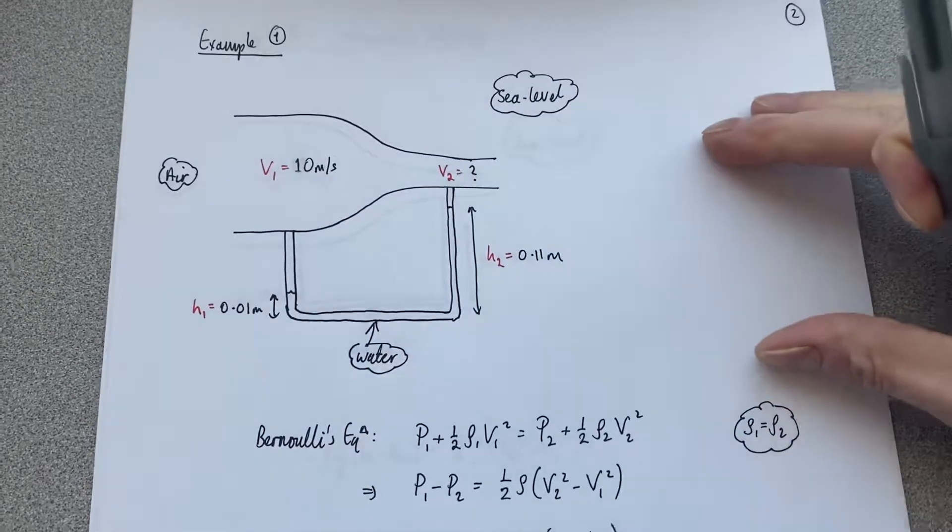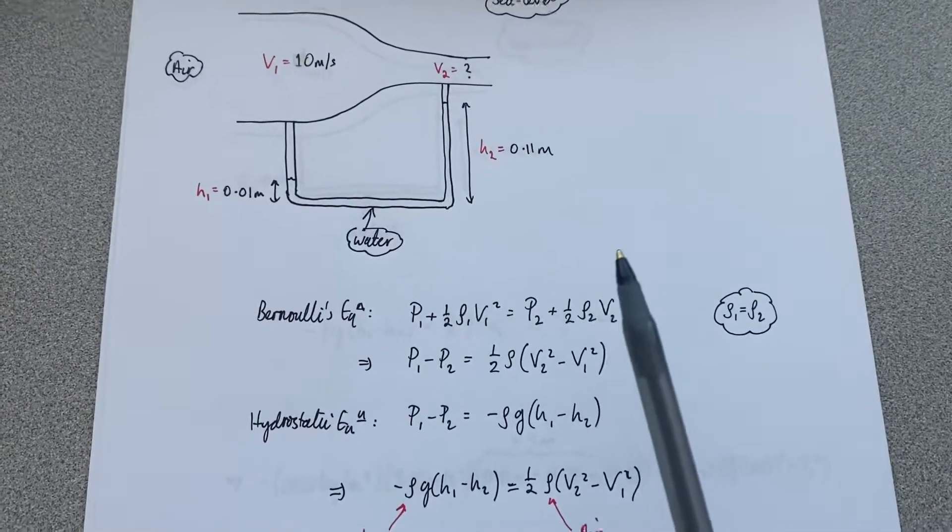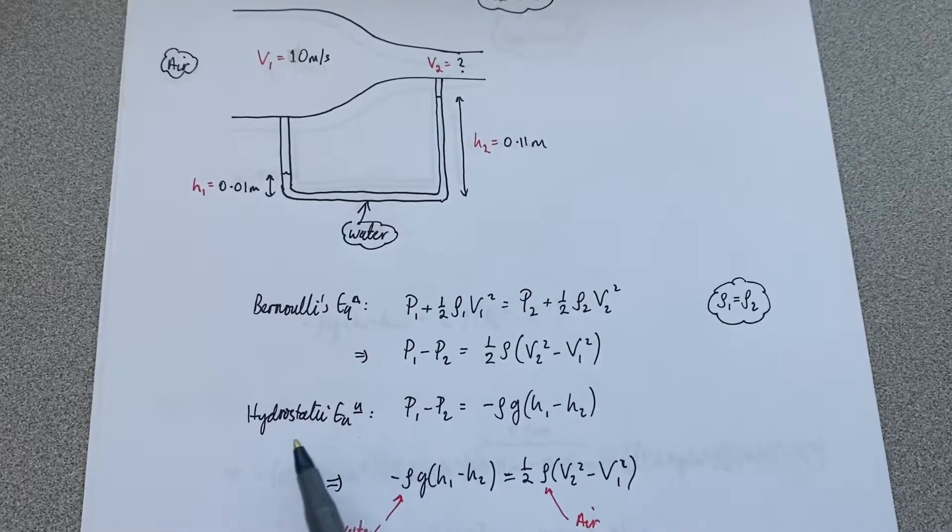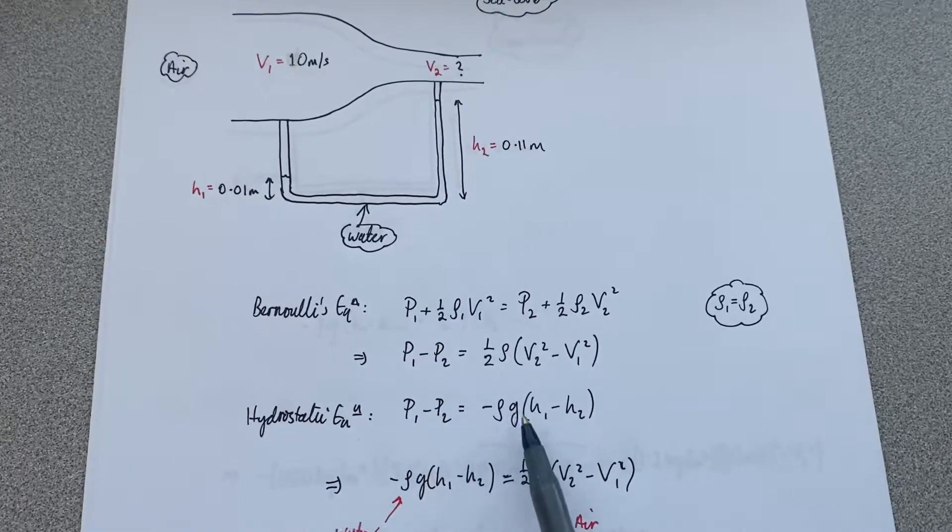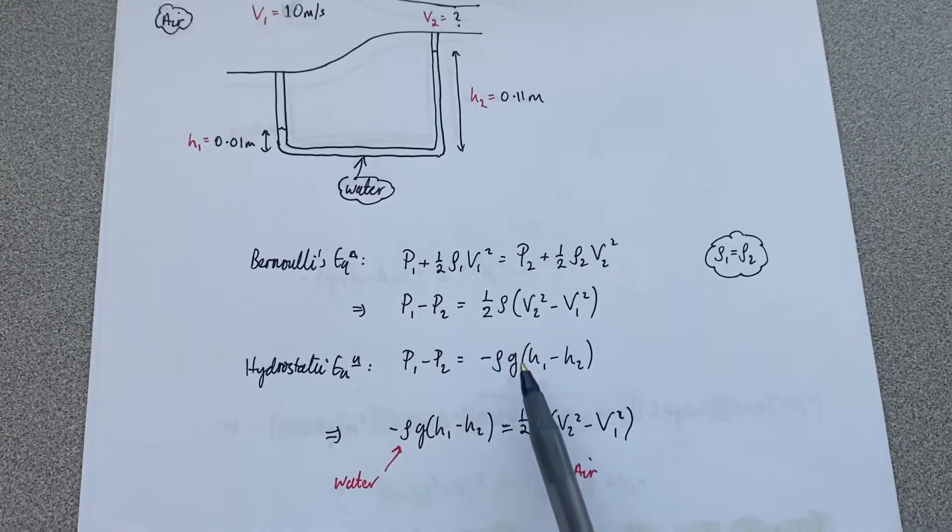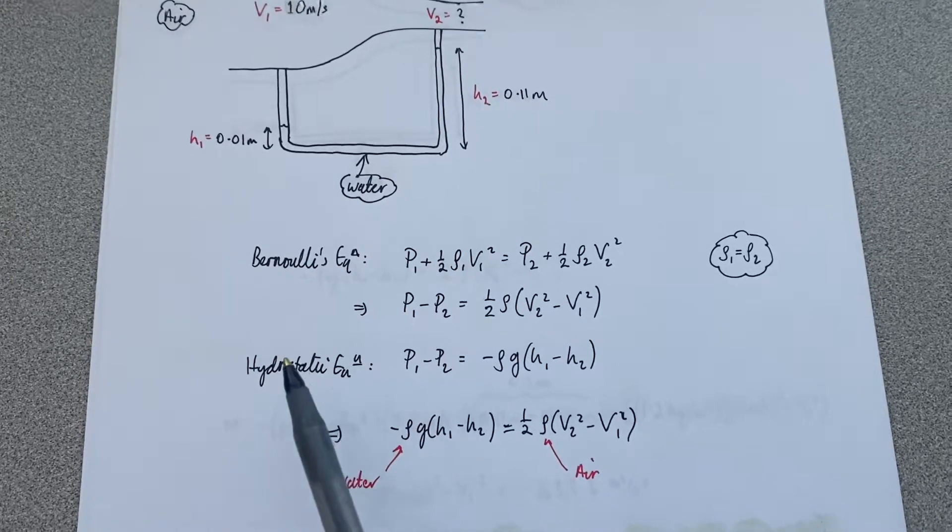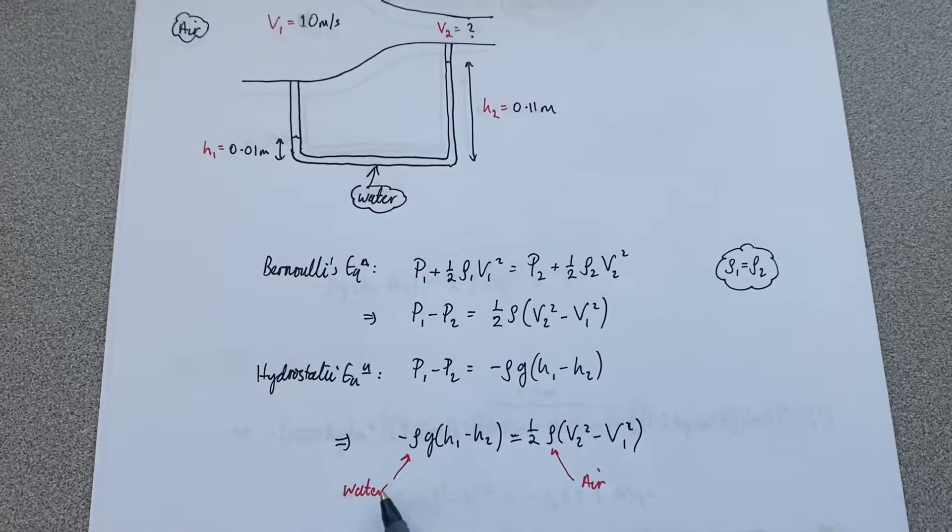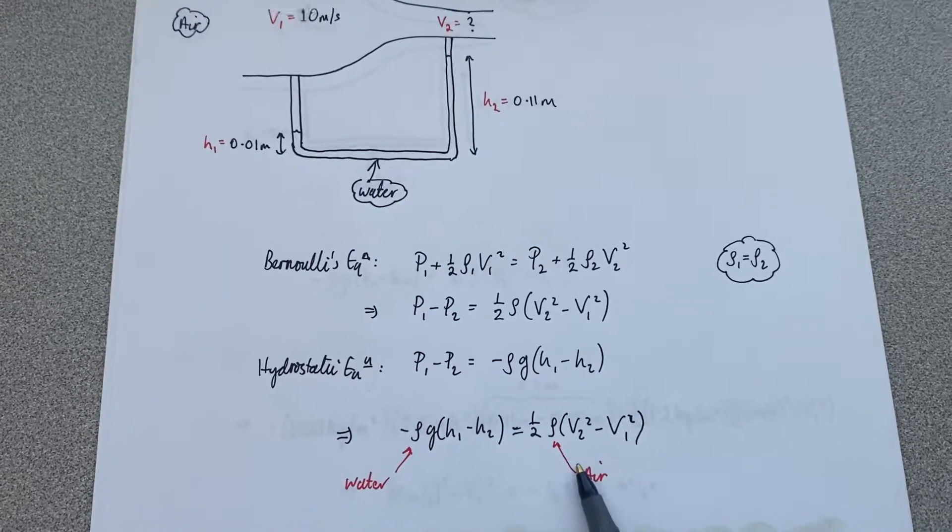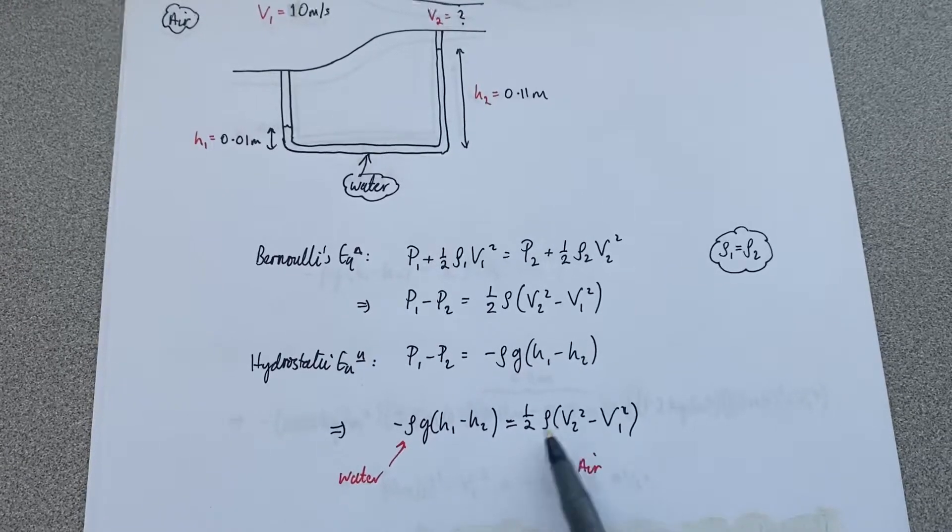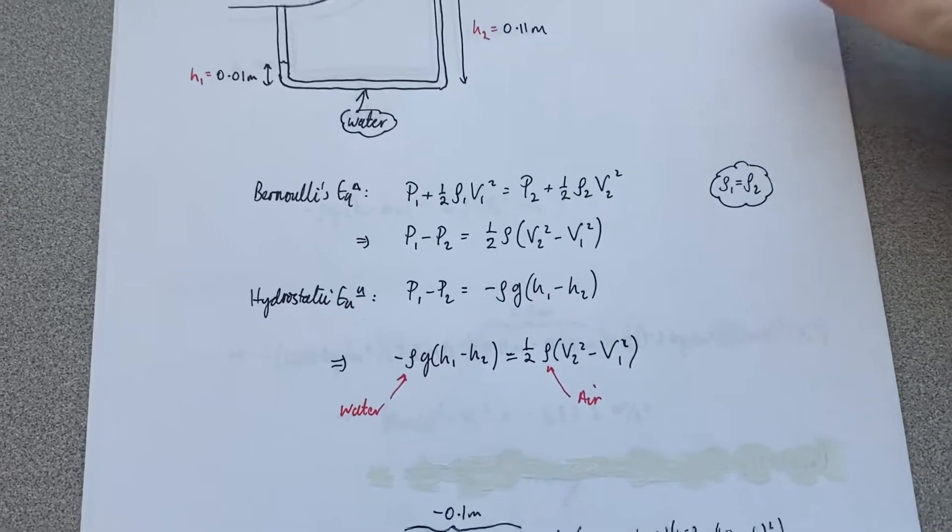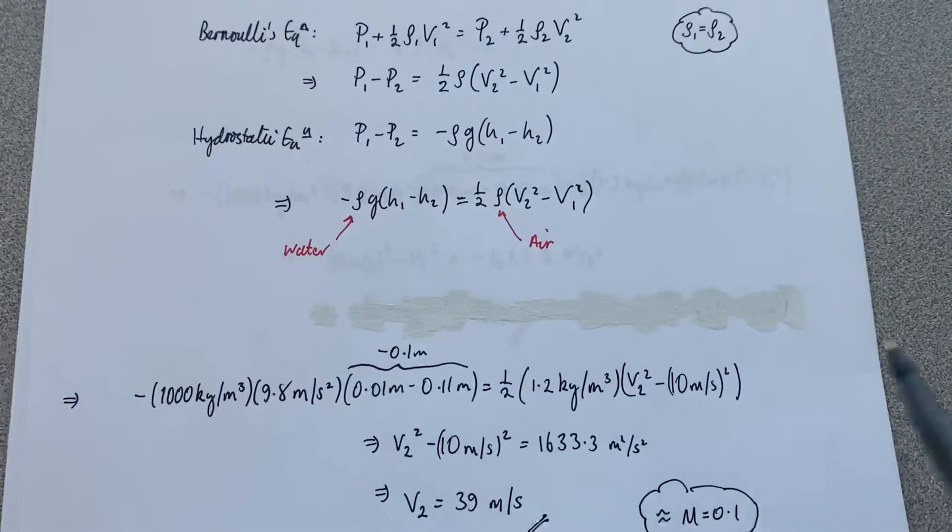So I start with Bernoulli's equation. I rearrange the left-hand side to give me p1 minus p2 so that I can use the hydrostatic equation, right? And therefore replace this side into here, remembering of course that this rho here, the one that comes from the hydrostatic equation, is the one associated with the water level in the pitostatic system. And the one associated with Bernoulli's equation is corresponding to the density of air.